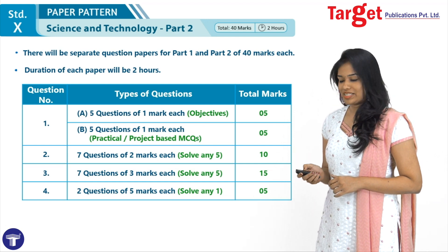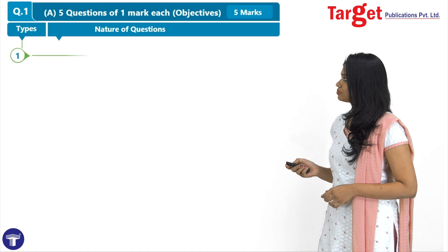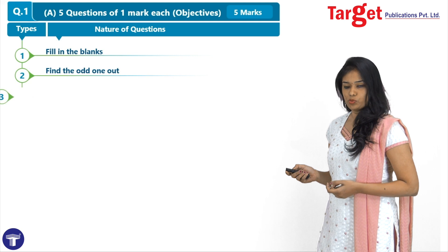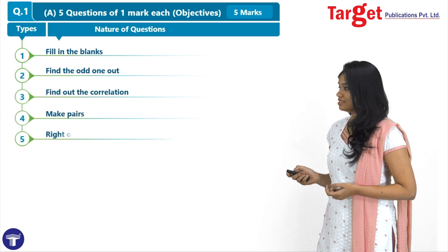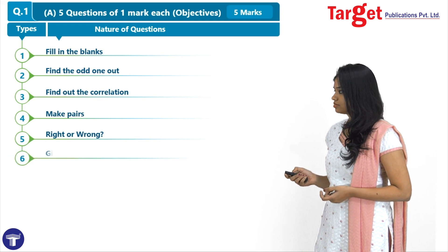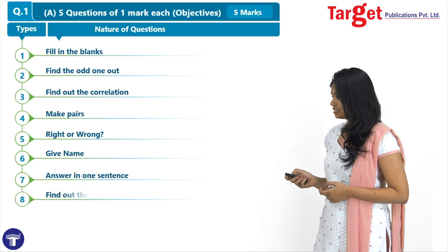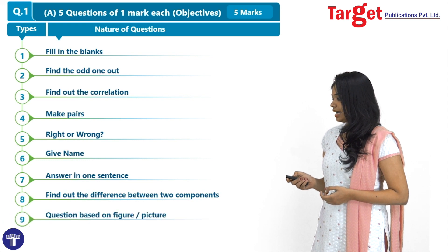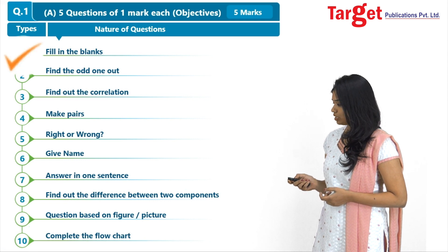Let us focus on each question type. In the first question, you would have different types of objective questions: fill in the blanks, find the odd one out, find out the correlation, make pairs, right or wrong, give name, answer in one sentence, find out the difference between two components, questions based on figure and picture, and complete the flow chart.